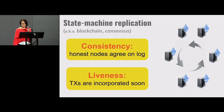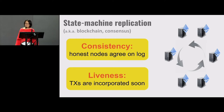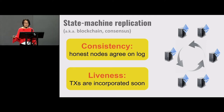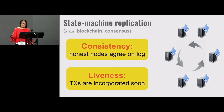Consistency says that all honest nodes must agree on the same log. Liveness says whenever I want to buy coffee, my transaction is going to get incorporated into honest nodes' logs very quickly. If all nodes were honest and correctly follow the protocol, the problem is somewhat trivial. But what makes this problem exciting is when some nodes can be corrupt and behave arbitrarily, deviating from the prescribed protocol. Even under such adversarial conditions, the remaining honest nodes must satisfy these two security properties.